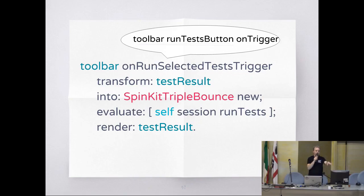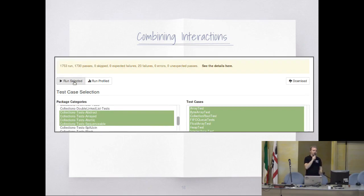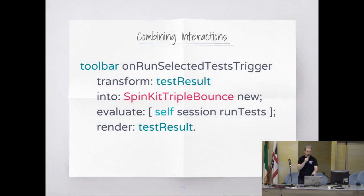The on-run-selected-test trigger is just mapped to the corresponding button on trigger. So we have some tests, I click it, this will be replaced with the spinner, go to the server, and render back the result. The code says: transform the test result to show the bouncing balls, go to the server, run the test, and when ready, render the result again.